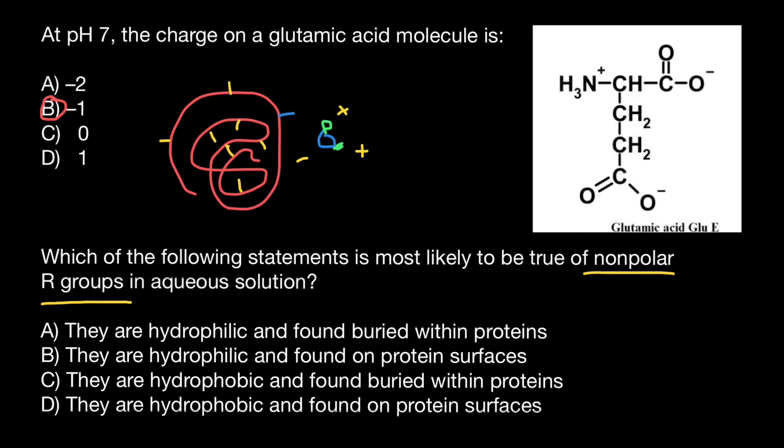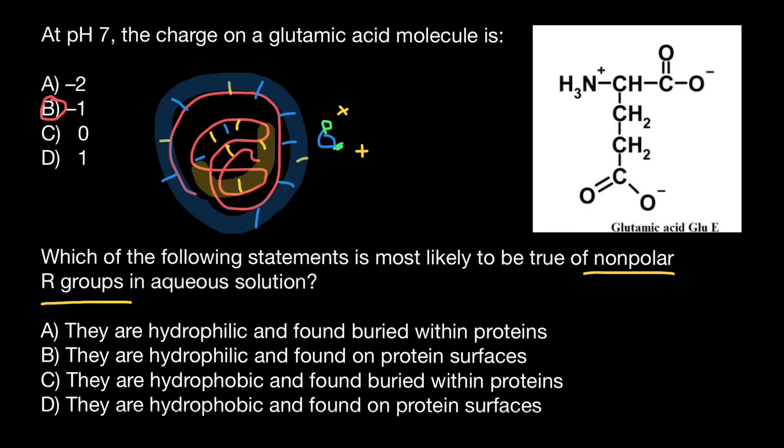Outside of the protein, we will find R groups which are polar or charged, and very few inside. R groups that are polar or charged are found outside of the protein, and those which are nonpolar and uncharged are mostly found inside of the protein.